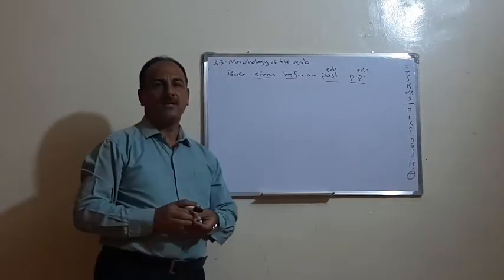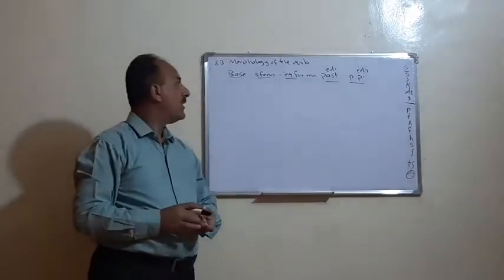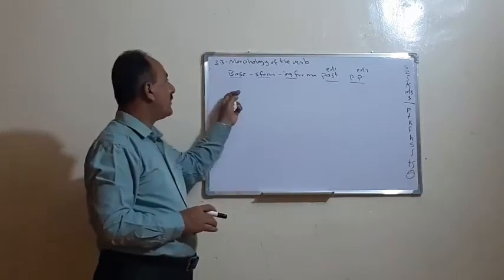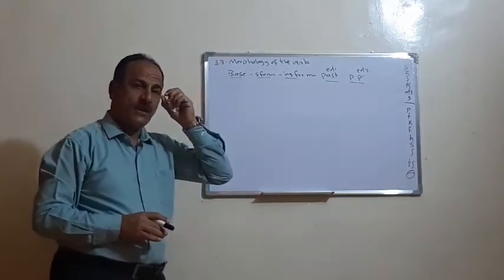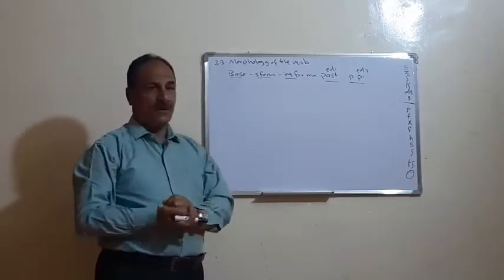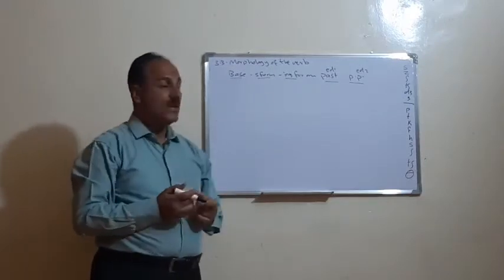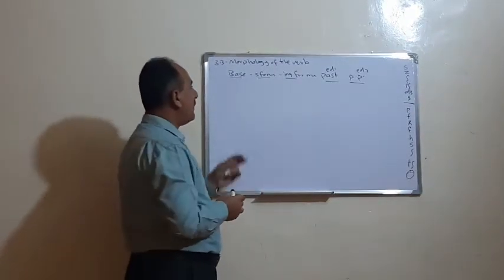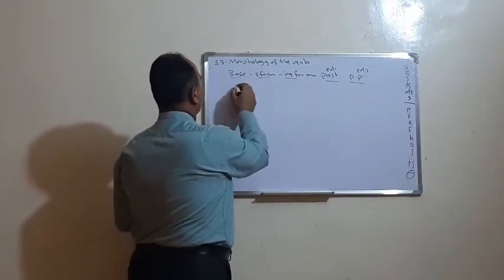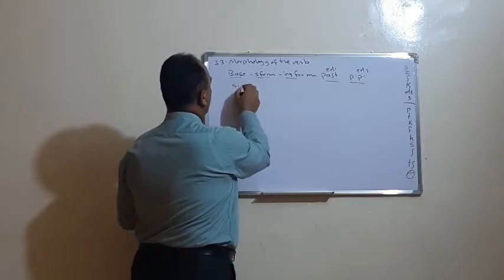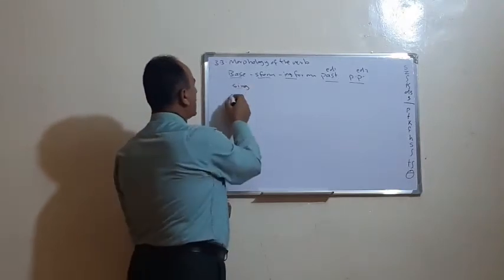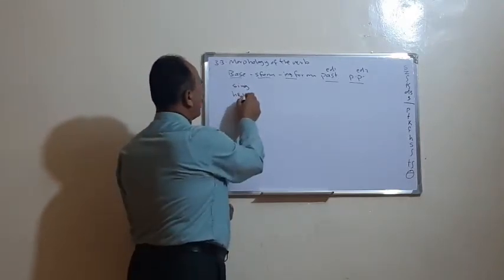Here we have section 3.3 talking about the morphology of the verb. Morphology means the structure of the verb. We have some issues to discuss concerning the verb, especially when we add something to the verb — the base, root, or stem — like for example the verb 'sing'.